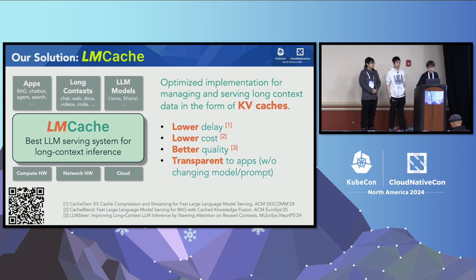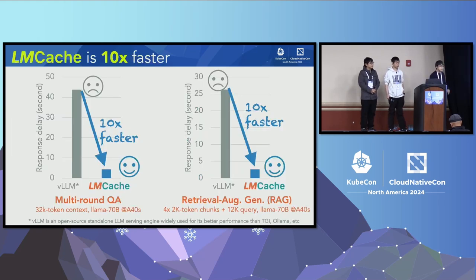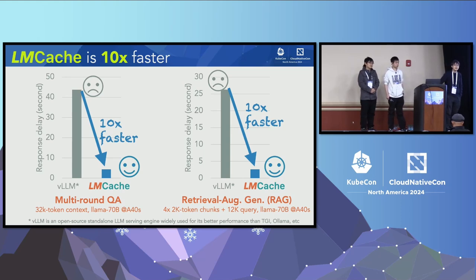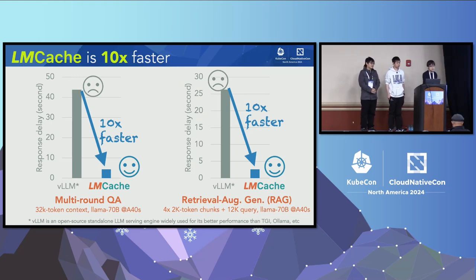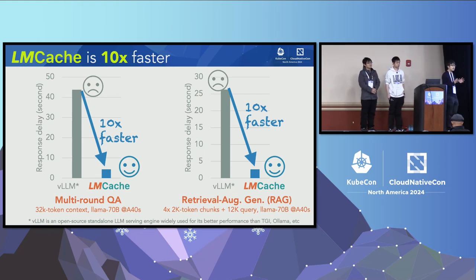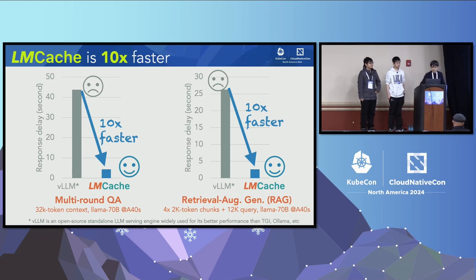Let's look at the speed-up. Compared to vLLM — a widely used open-source project known for superior performance over alternatives like TGI or Ollama — LMCache can still reduce the time-to-first-token by 10x in popular applications such as multi-turn QA and retrieval augmented generation. LMCache is a system built on top of existing serving engines — it's actually built on top of vLLM, so if you use vLLM, you can use LMCache directly.